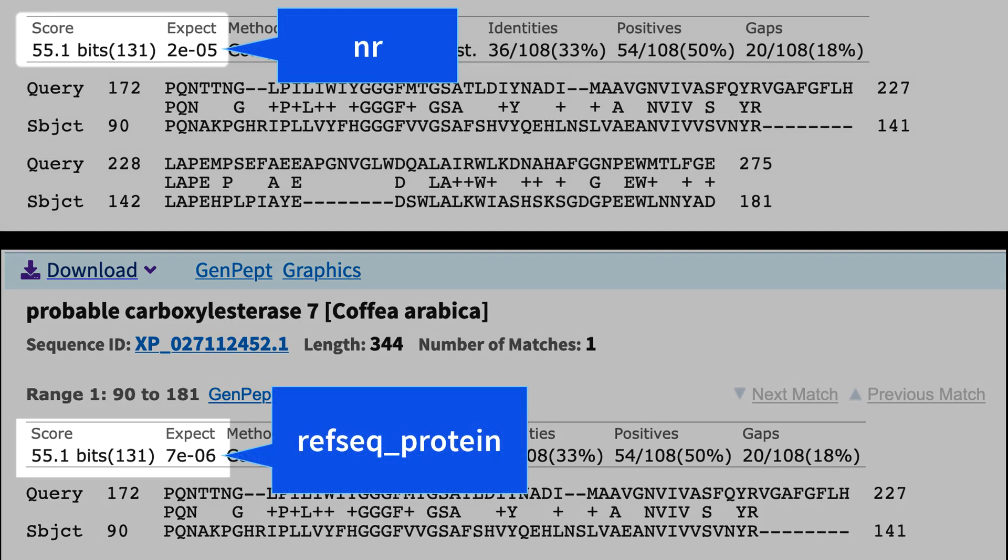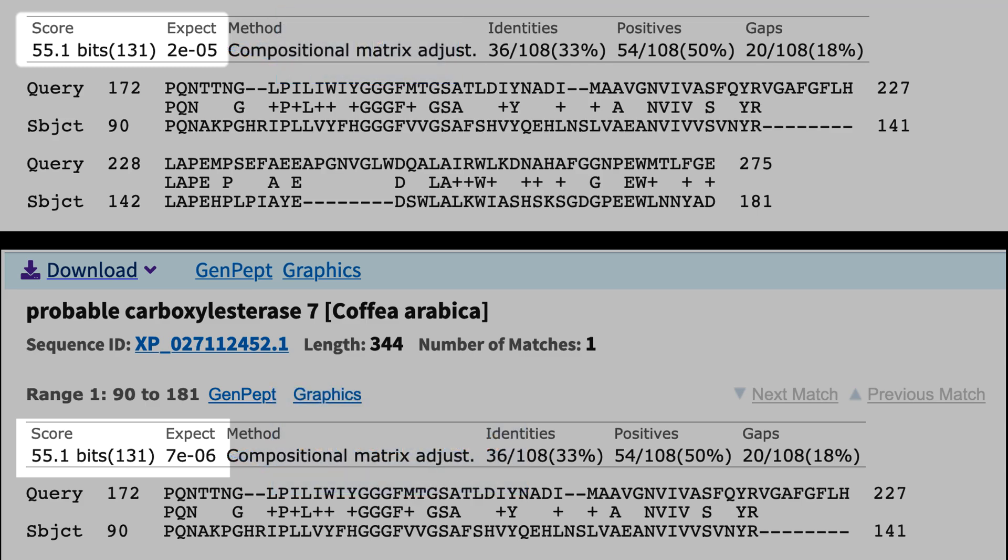Even identical alignments from searches of different databases will receive different E-Values. The bit scores, however, remain the same.